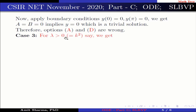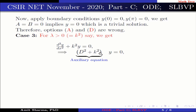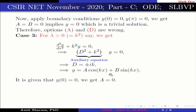Case 3: For λ > 0, say λ = k², we get d²y/dx² + k²y = 0. The auxiliary equation d² + k² = 0 has roots ±ik, giving the general solution y = a cos(kx) + b sin(kx). Applying y(0) = 0 gives a = 0. Applying y(π) = 0 gives b·sin(kπ) = 0.